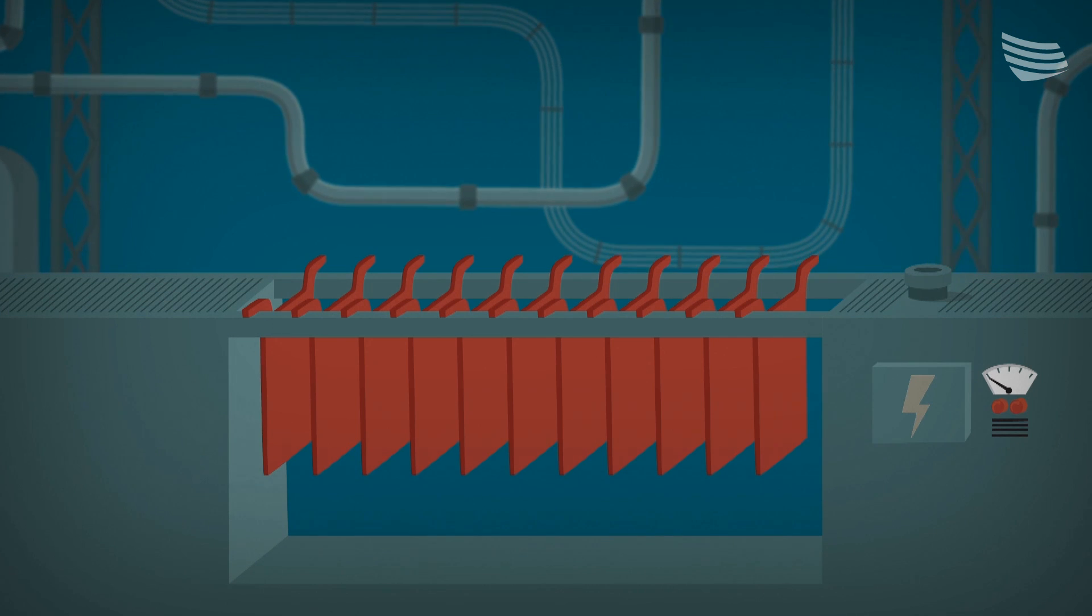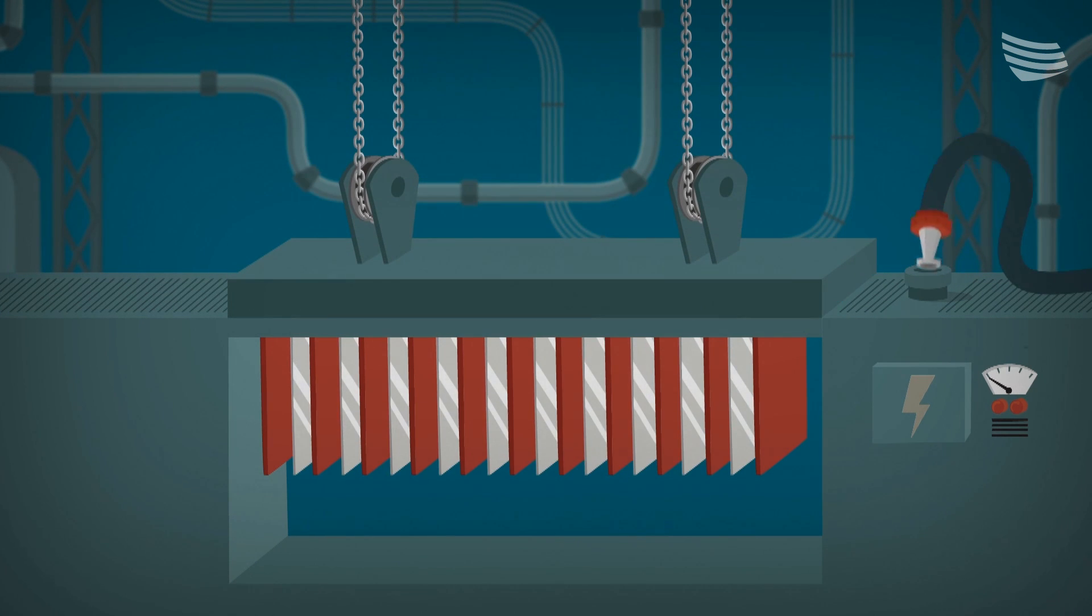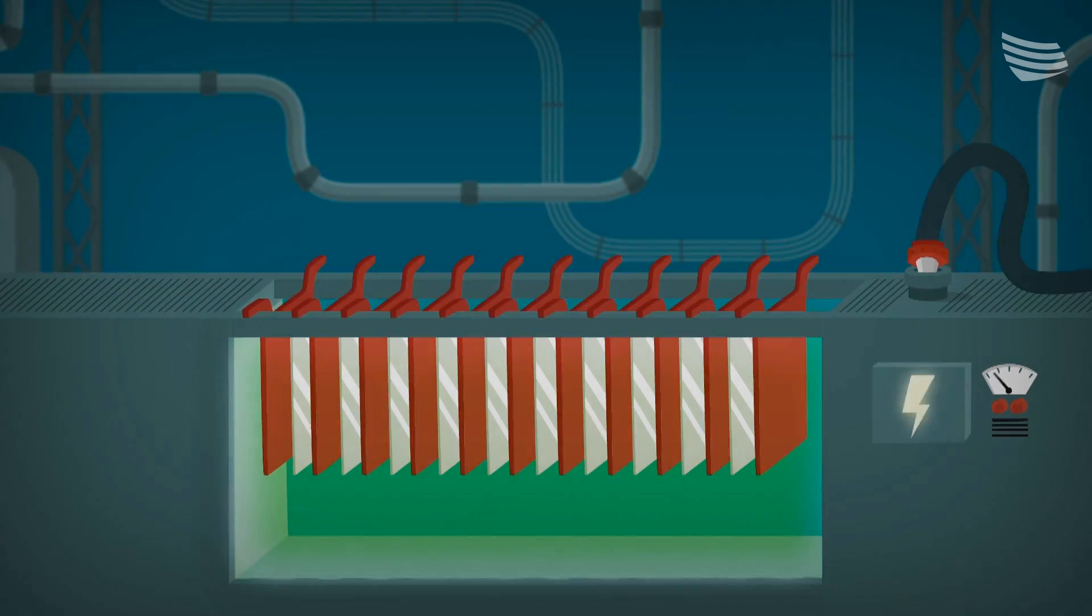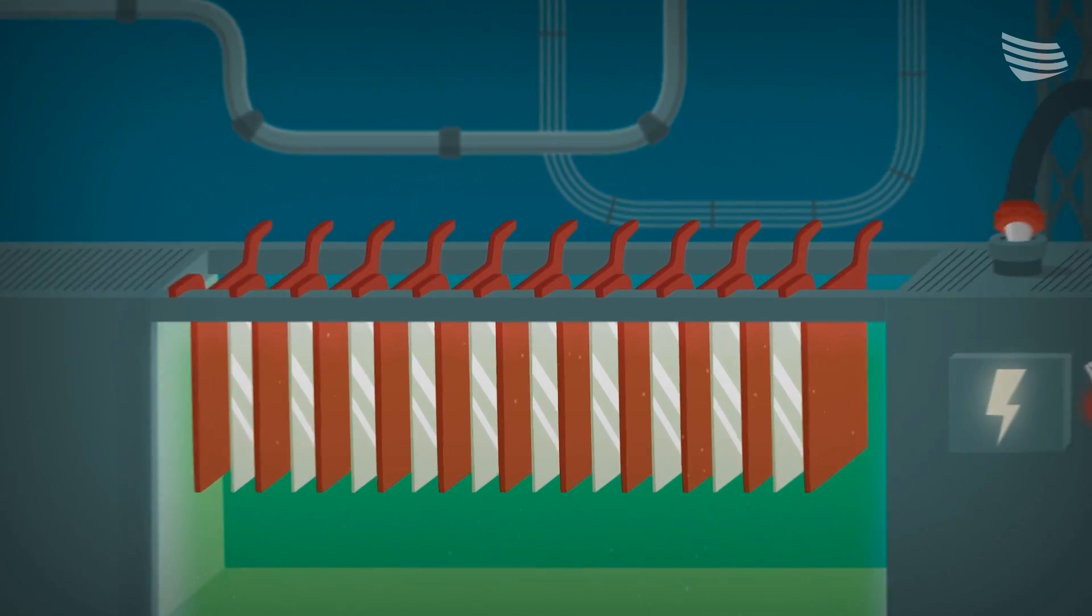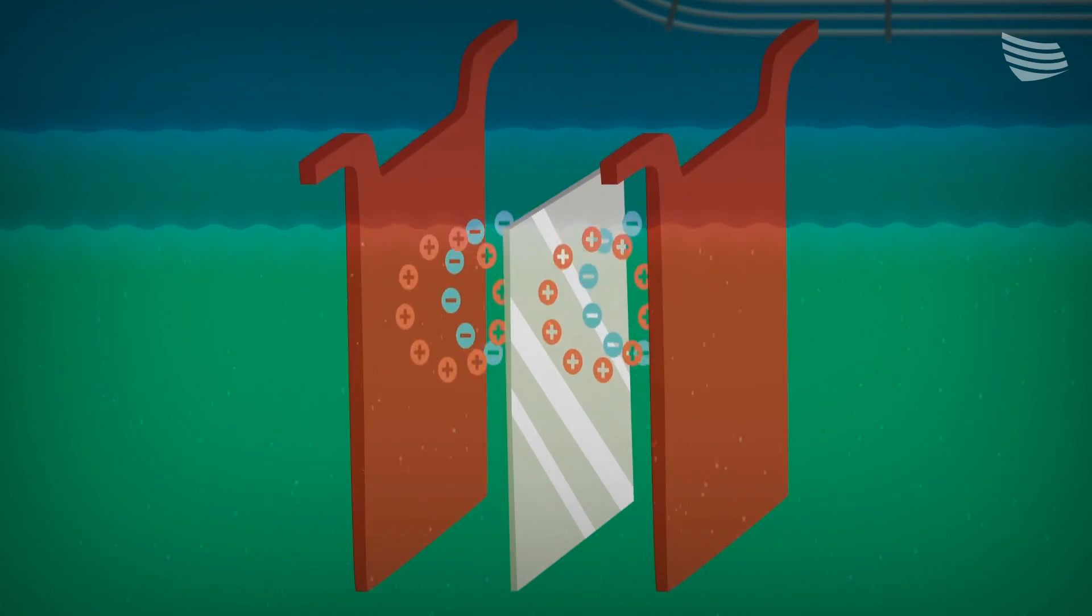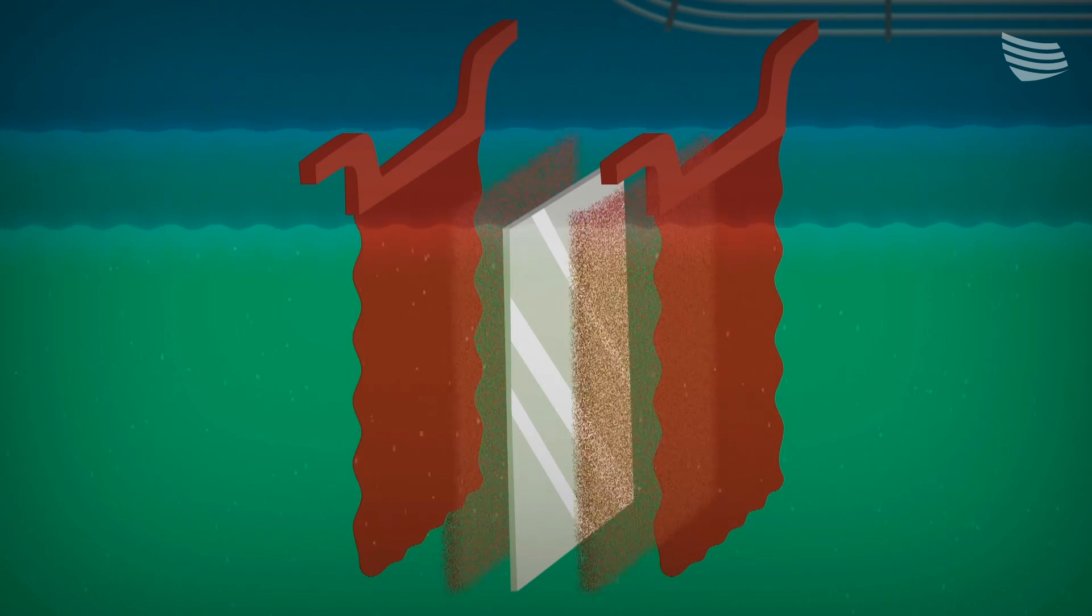We hang hundreds of anodes in tanks with sheets of stainless steel mixed in. We fill the tanks with copper sulfate and apply electrical current. The current surges through, generating positive and negative ions that drag the copper particles from the anodes to the sheets.